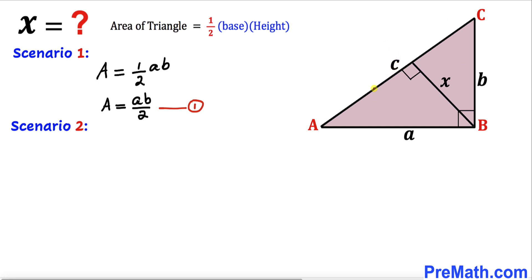Where this side length AC, which is C, is going to be our base, and then X is going to be our height. Then the area of this triangle ABC is going to become area equals one-half times base times height.